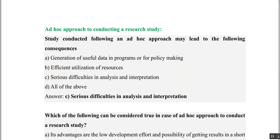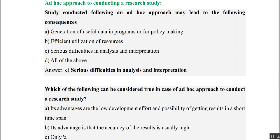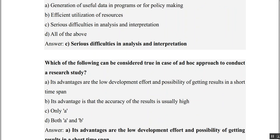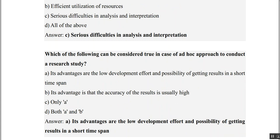Which of the following can be considered true in case of an ad-hoc approach? Its advantages are low development effort and getting results in short time span — yes, that is true. Its advantages include accuracy of results usually being high — no, results are not accurate. So only A is the answer. ICMR expects the best single answer, and the first option — low development effort and possibility of getting results in a short span — is the correct answer.